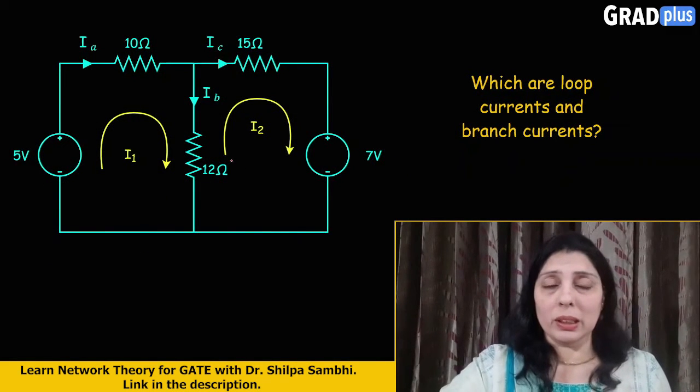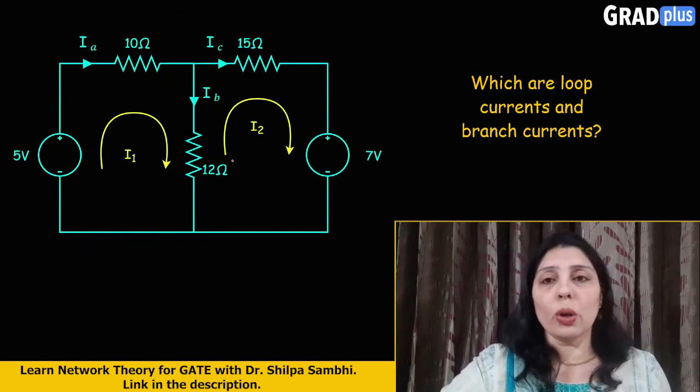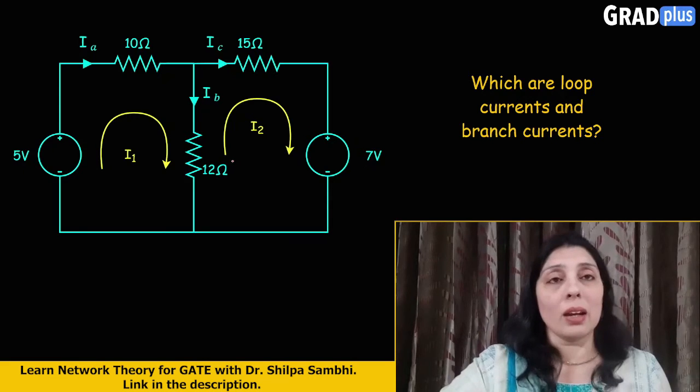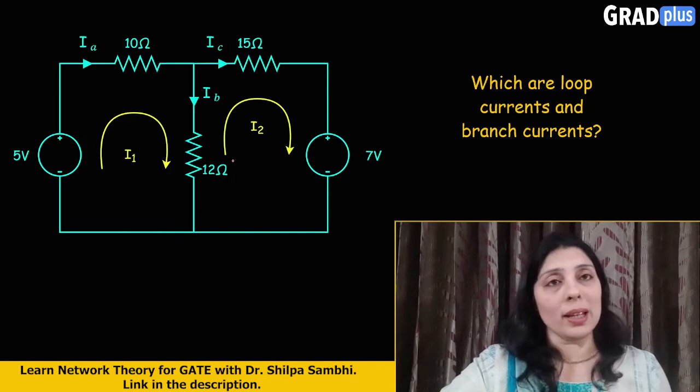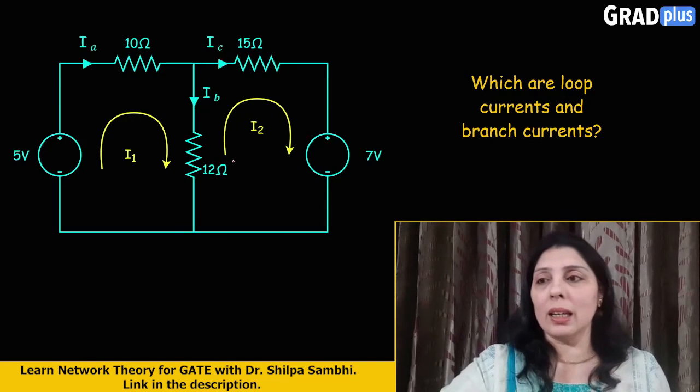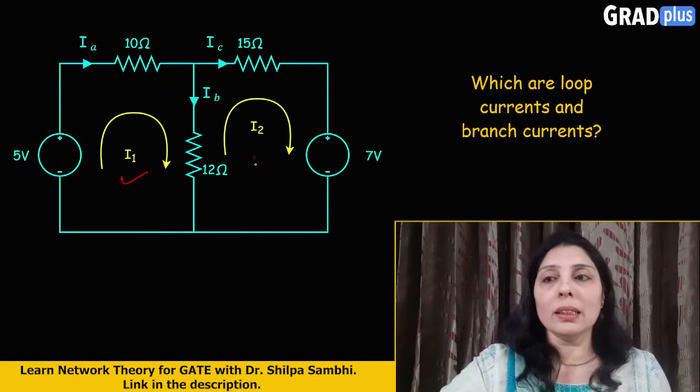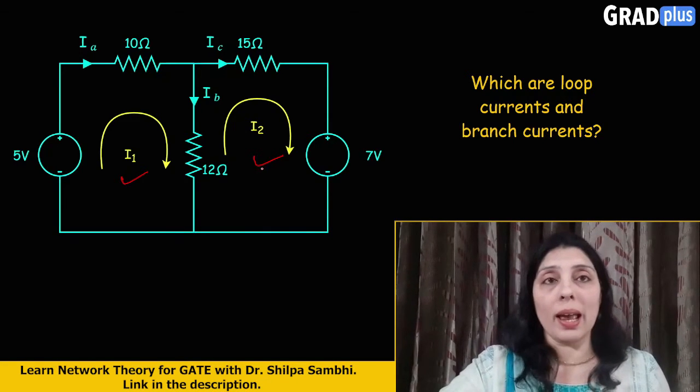So if we take up this particular example here, there is a small circuit. So you need to guess which one of them is the loop current and which of them is representing the branch current. So as you can see in this particular circuit, the ones which are marked as I1 and I2, these are the loop currents which are imagined by us.